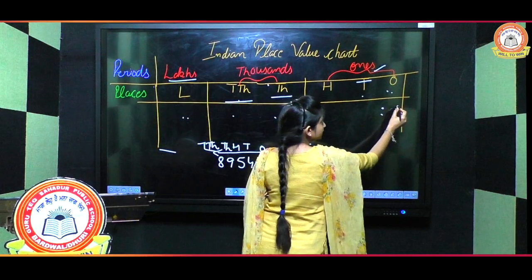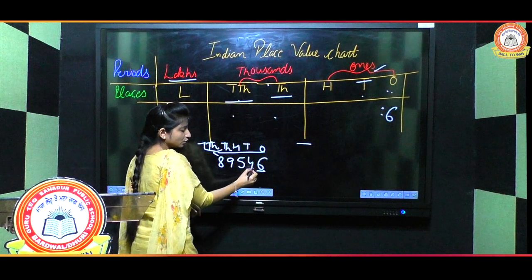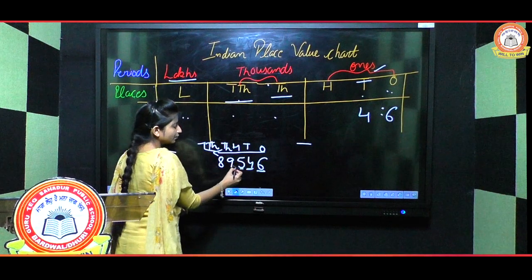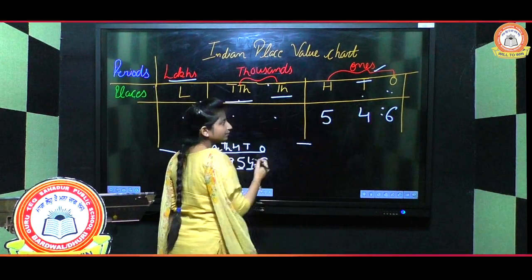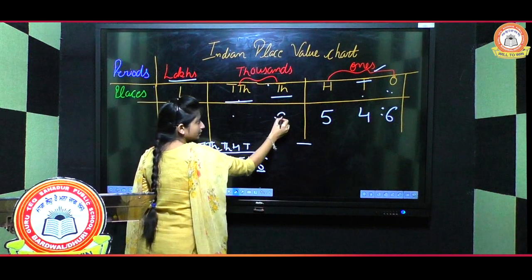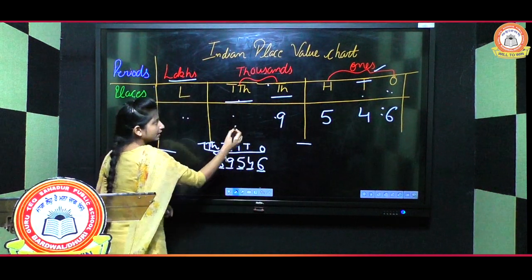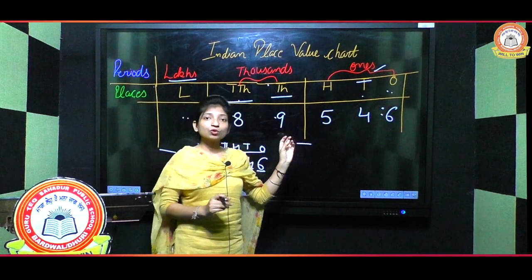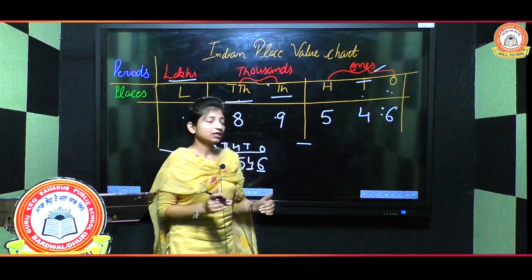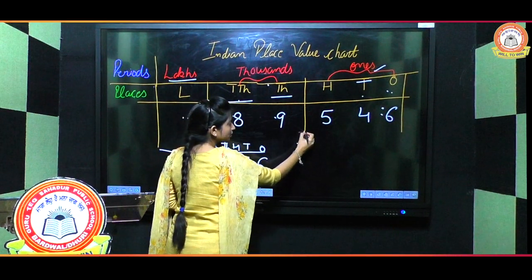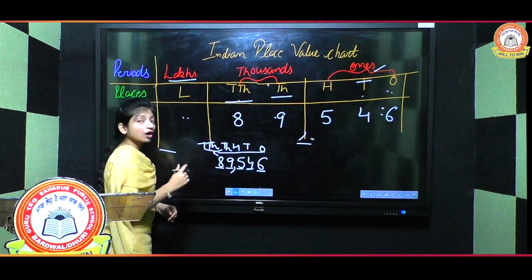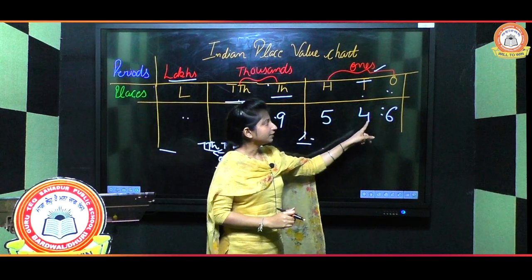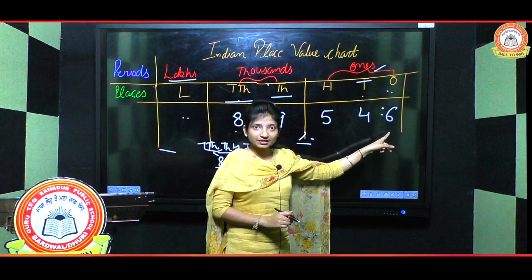We start from the right side. Ones place: six. After that four, then five, then nine, then eight. Whenever the periods are marked, we put commas to separate them. So the number is written as 89,546. That is how we read it: eighty-nine thousand five hundred forty-six. Clear to all?